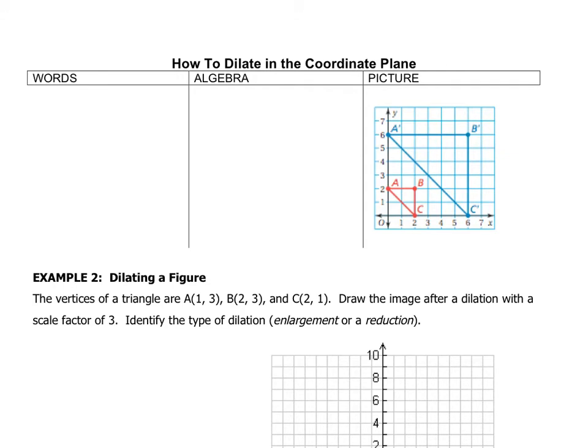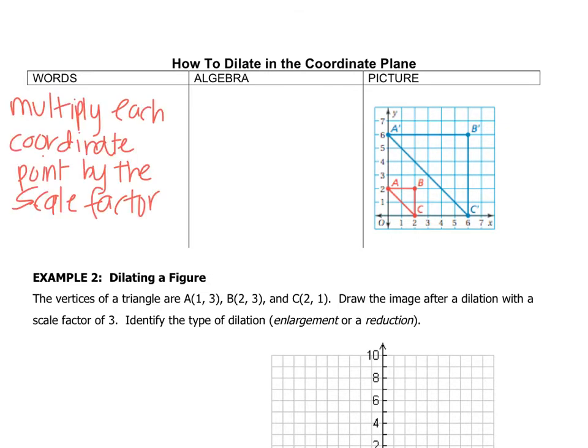Here we've got our handy chart with the words and the algebra and the picture. So what we do in order to take ABC and dilate it to triangle A prime, B prime, C prime is we would multiply each value of the coordinate by the scale factor. What that means in algebra is we start off with XY and the letter that we use for the scale factor, don't ask me why, probably Greek, a lot of math has Greek origins, but we use K to represent the scale factor. And so what we would do is we would take our point XY and we would turn it into K times X, comma, K times Y. Remember, a variable next to another variable means multiplication. So we multiply all the numbers in the coordinates by the scale factor. It doesn't really get super complicated.